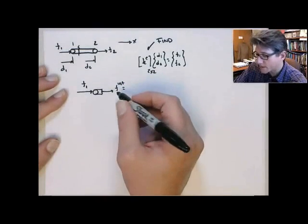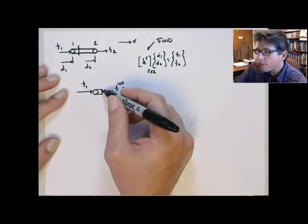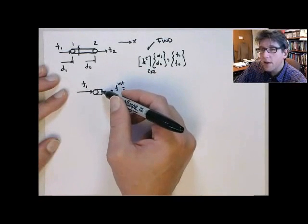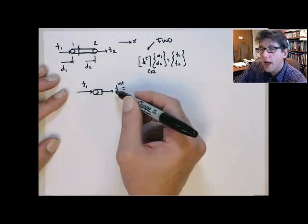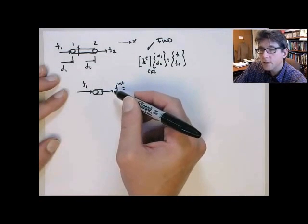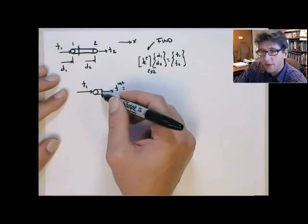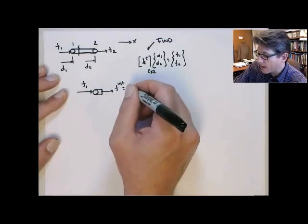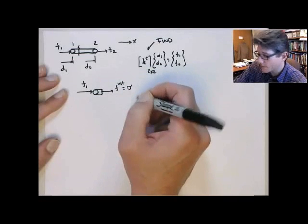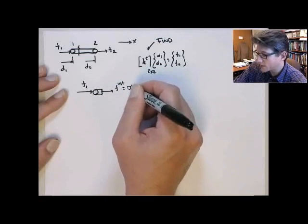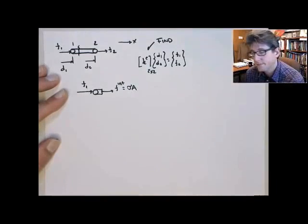We're going to assume that the stress is positive when it's in tension. So if this bar is in tension, then the internal force is going to act to the right, and it's going to act on this cross-sectional area. Its value is going to be the internal stress sigma times the cross-sectional area a.